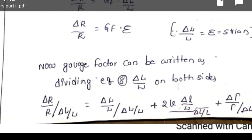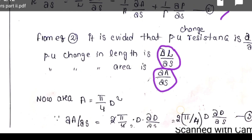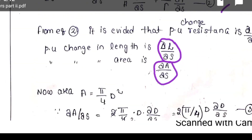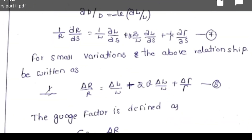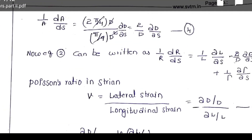Now, A equal to pi by 4 D squared — that you already know, for a cylinder, the area is pi by 4 times diameter squared. Similarly, dou A by dou S equal to 2 times pi by 4 times D times dou D by dou S. That is equation number 3. After that, 1 by A times dA by dS, we finally obtain 2 by D times dou D by dou S.